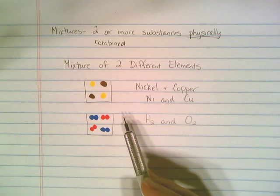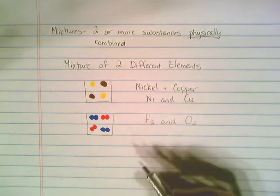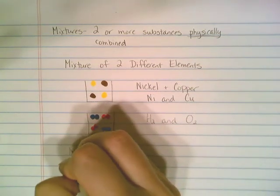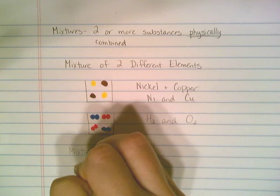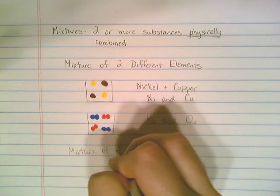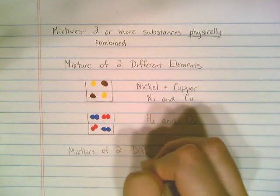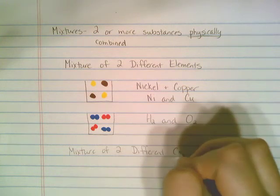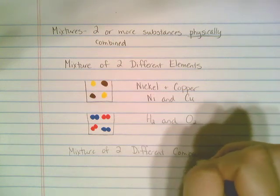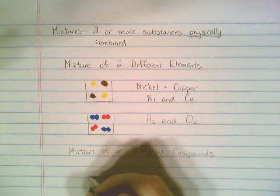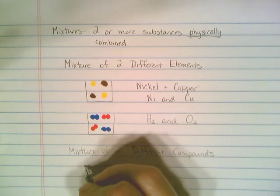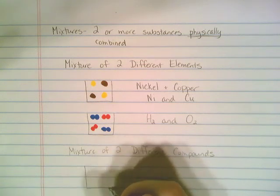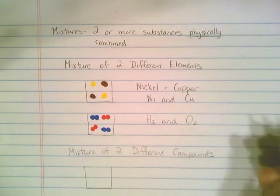We were just doing mixtures of two different elements. What would it look like if you had a mixture of two different compounds? So if you poured yourself a glass of soda, a key ingredient in soda